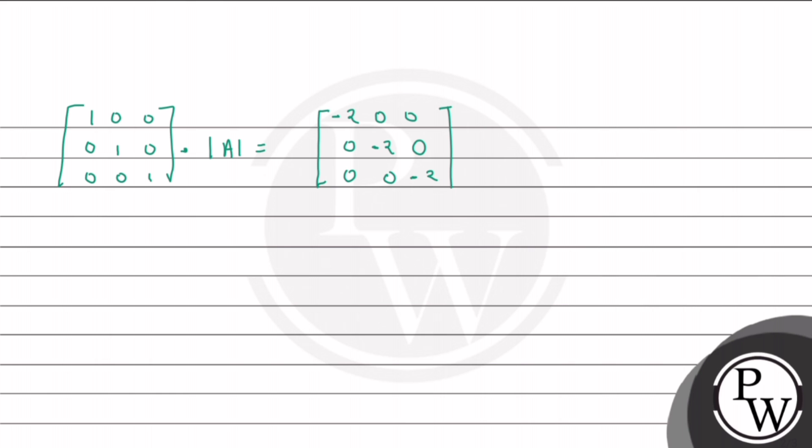So here I can clearly say that our determinant of A is equal to -2, because when we multiply -2 and the identity matrix, we will get this matrix.